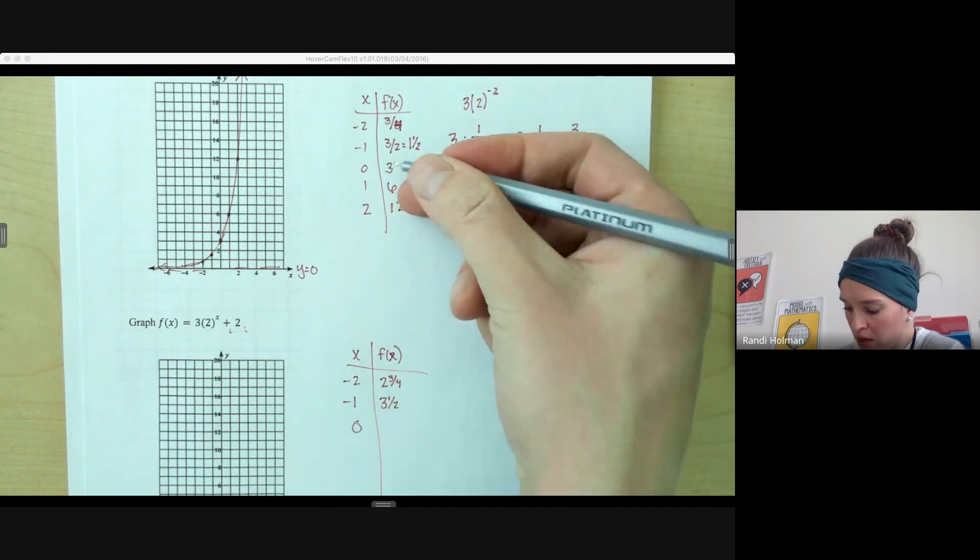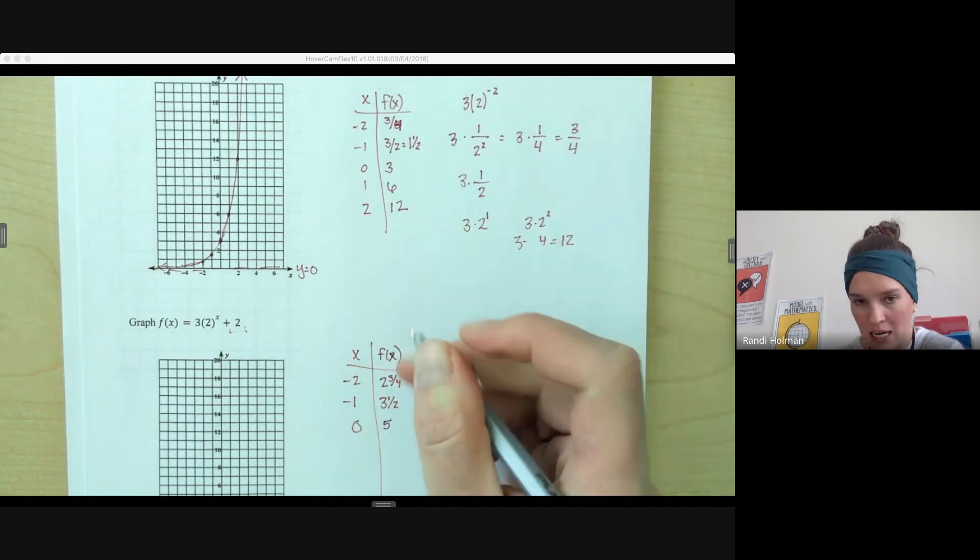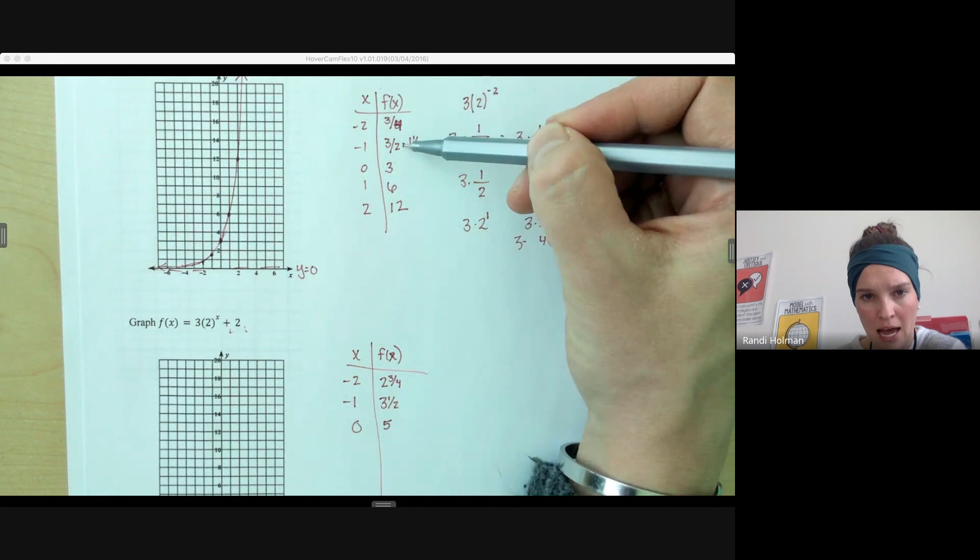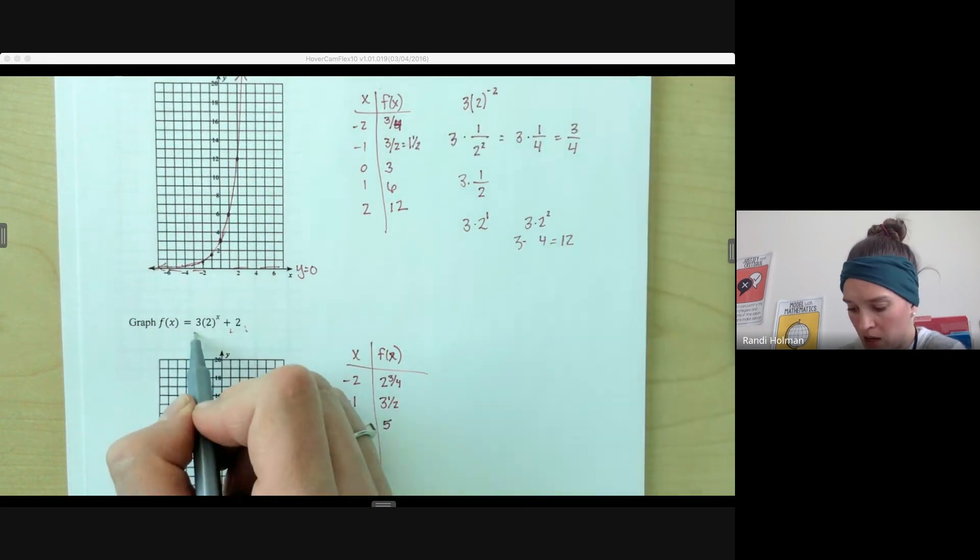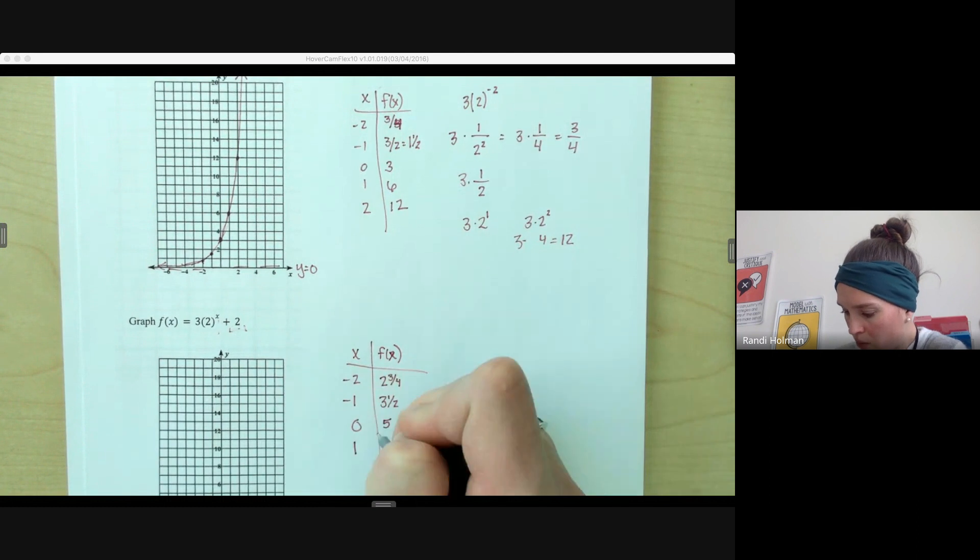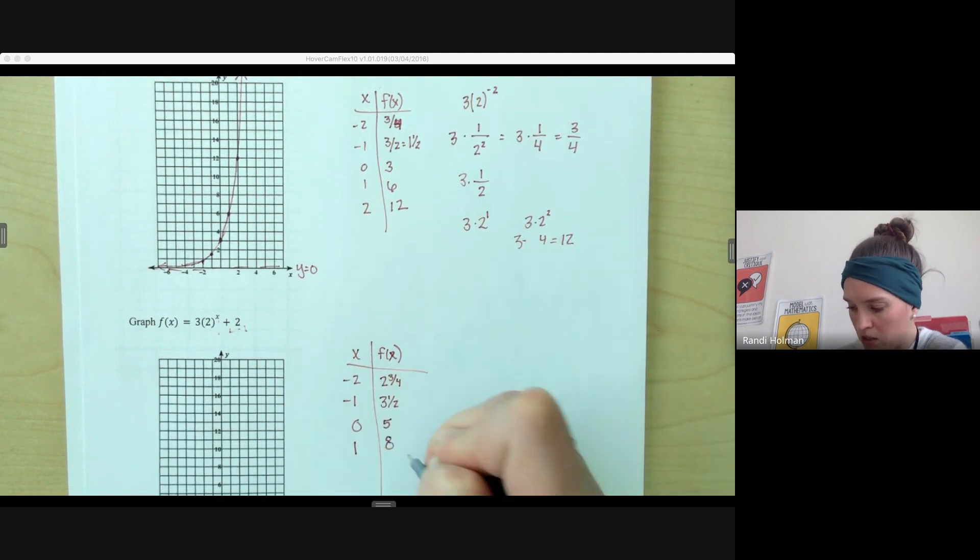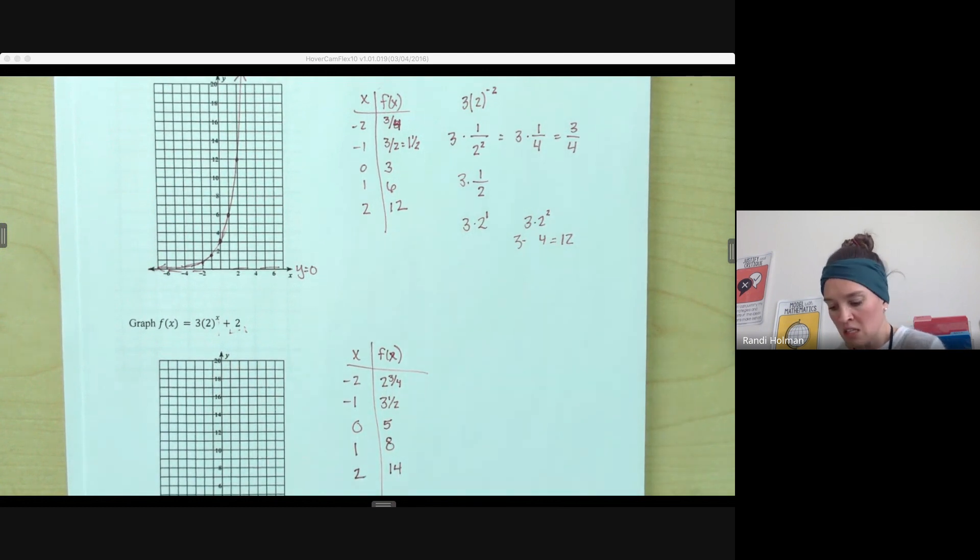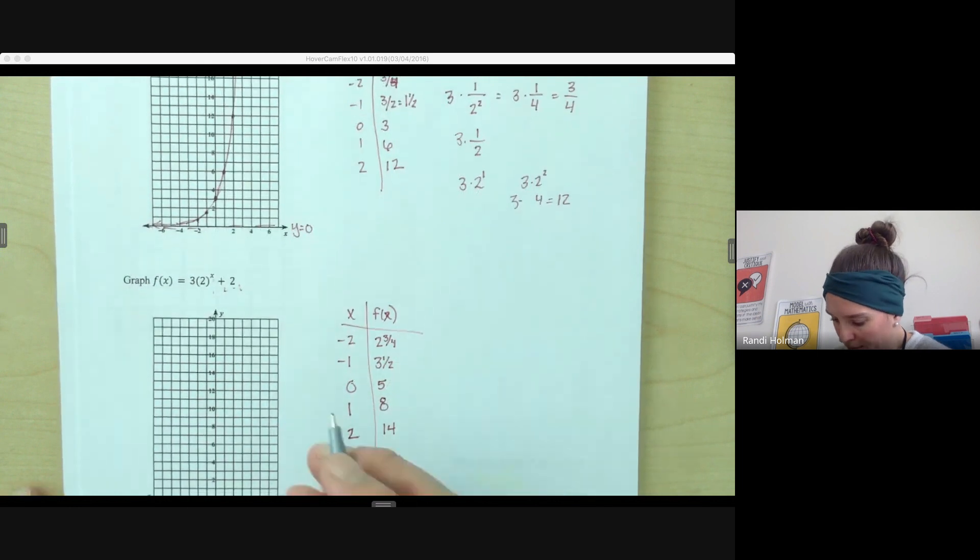At 0, instead of being at 3, we'll be at 5. We're just taking each of these values and adding 2 to them, right? Because these values would be the same. And then we have this additional plus 2. At 1, instead of 6, we'll be at 6 plus 2, which is 8. At 2, instead of 12, we'll be at 14. So we're going to look at those values as we graph here.